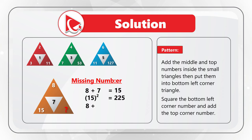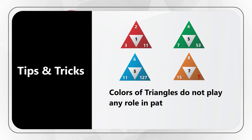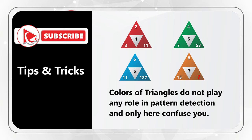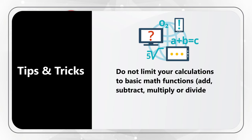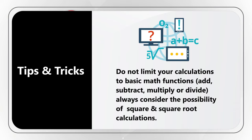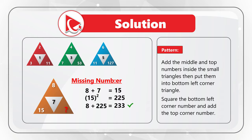So the final number will be 233. Now let me share with you some tips and tricks on how to better solve these types of challenges. You see that the triangles are of different colors, and colors here are only to confuse you — you can completely ignore them. Another trick is that typically you might limit your calculations to just adding, subtracting, multiplying, and dividing numbers. Keep in mind that there's always a possibility of squaring numbers and taking square roots. It's good to remember squares of particular numbers, probably up to 20, so you can manipulate them in your head without using a calculator.